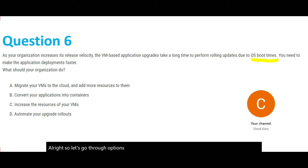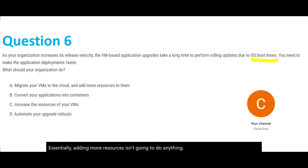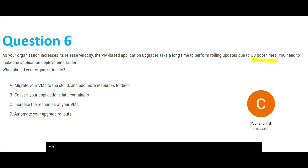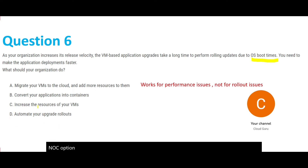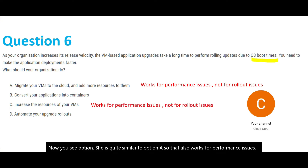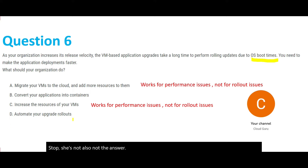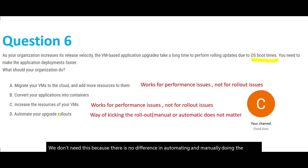Let's go through the options. Option A is migrate your VMs to the cloud and add more resources to them. Adding more resources — increasing storage or enhancing CPU performance — only addresses performance issues, not rollout speed, so that's not the answer. Option C is quite similar to option A, also addressing performance issues and not rollout issues, so option C is also not the answer. Option D is automate your upgrade rollouts — there's no meaningful difference between automating and manually doing the upgrade rollouts, so option D is also not the answer.